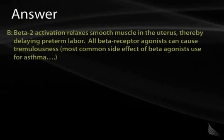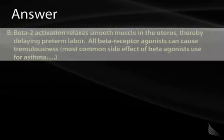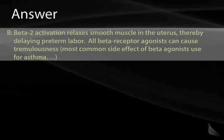To answer this correctly, one must recognize what receptor type one would activate to delay preterm labor. Beta-2 receptors are found on smooth muscle in the uterus and, when activated, relax smooth muscle. Additionally, any form of beta stimulation will cause tremulousness. So we have a combination: beta-2 activation for tocolysis and beta agonism causing the described side effect. The answer is B, beta-2 adrenergic.